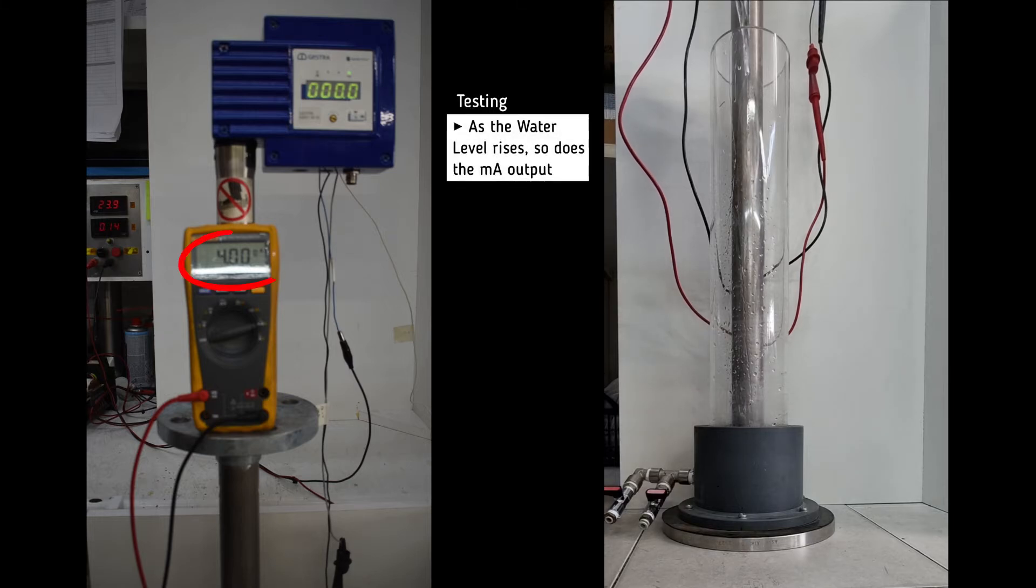By situating our transmitter inside a tank, we add water and we can see that as the water level rises, so does the milliamp output as shown on the multimeter screen.